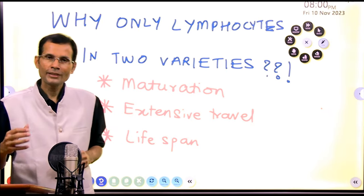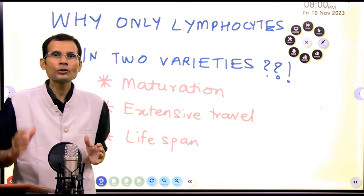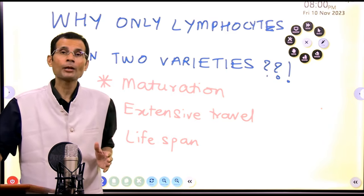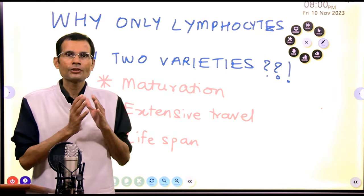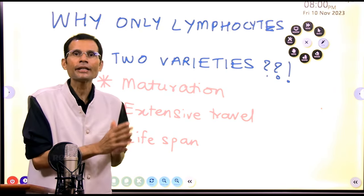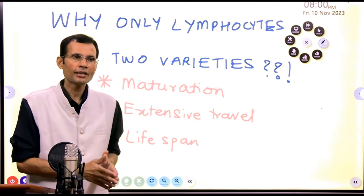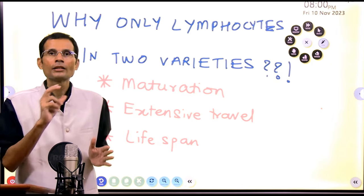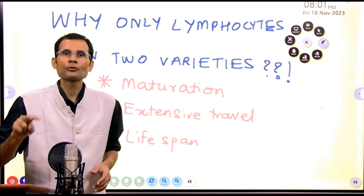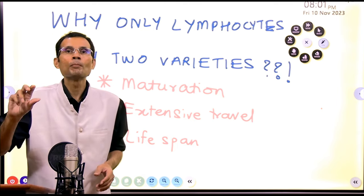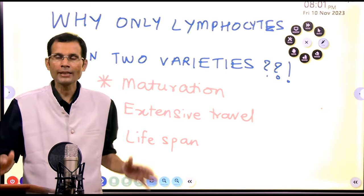No other blood cell shows this type of variation but lymphocytes do. So let's try to understand why lymphocytes occur in two varieties in the peripheral blood. First of all, let it be clear that there is no correlation with T and B lymphocytes. T and B lymphocytes are the functional varieties of lymphocytes, while small and large lymphocytes are the morphological varieties.